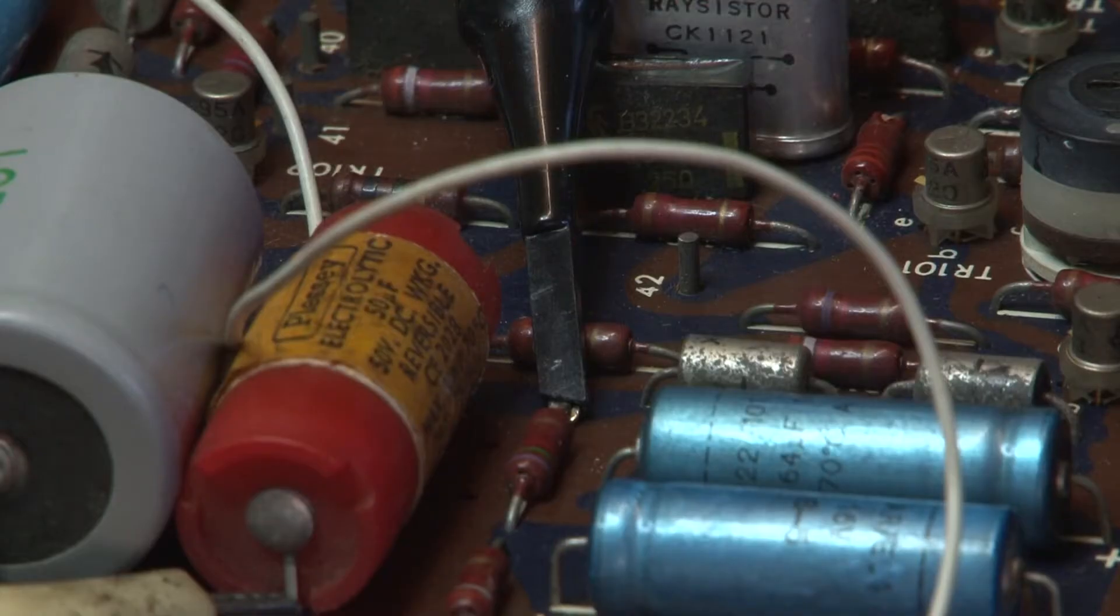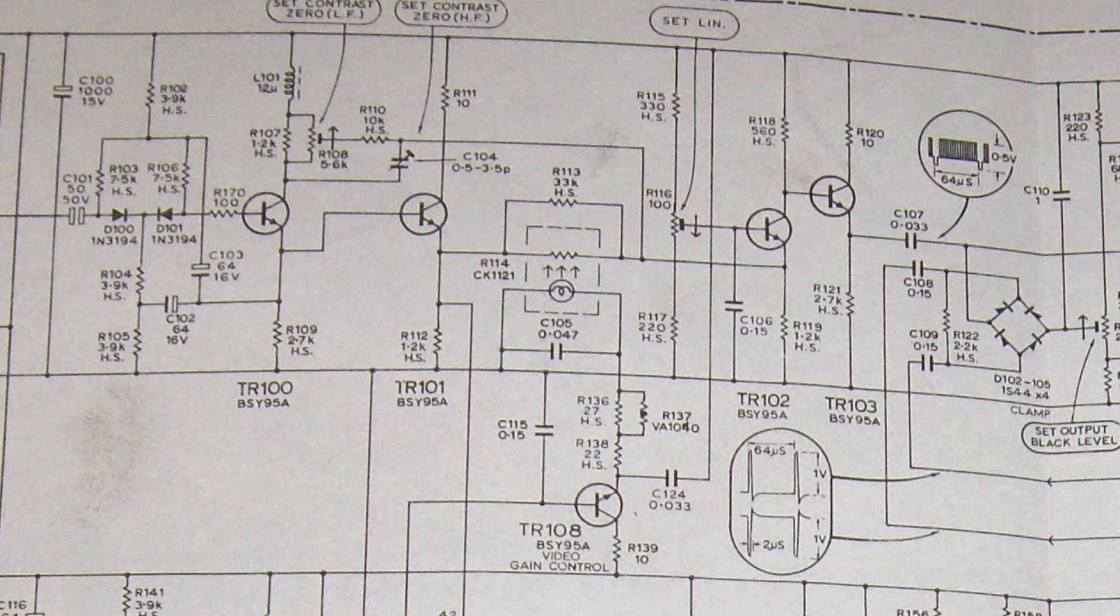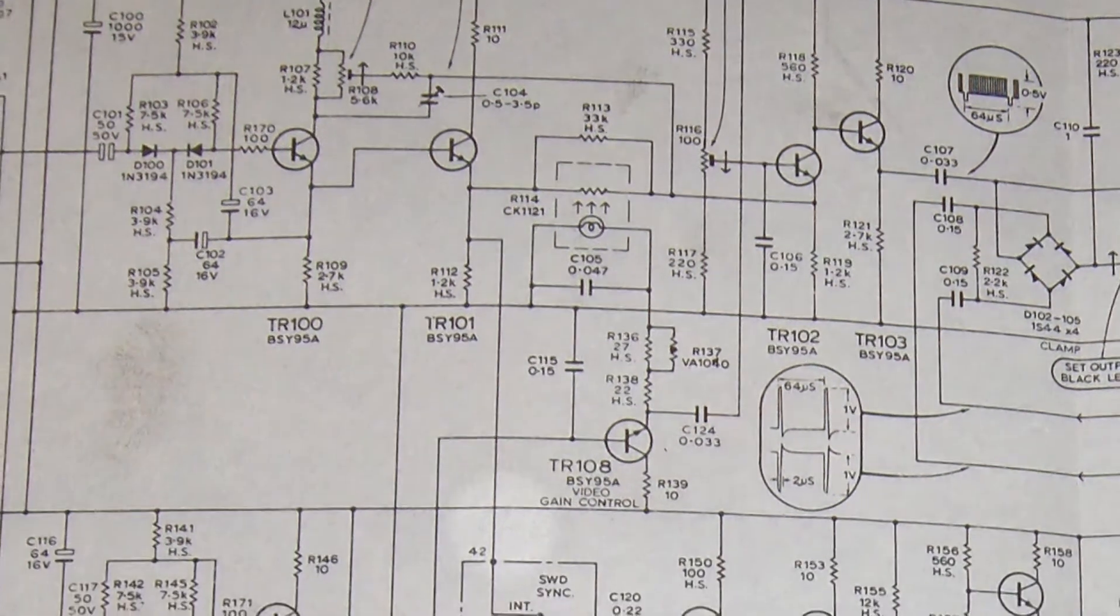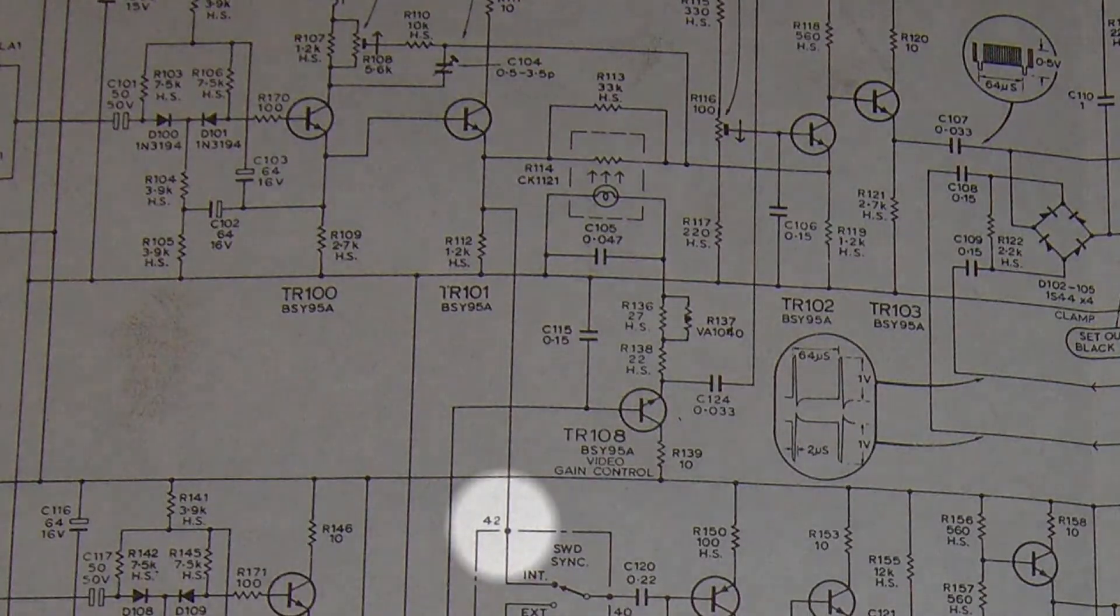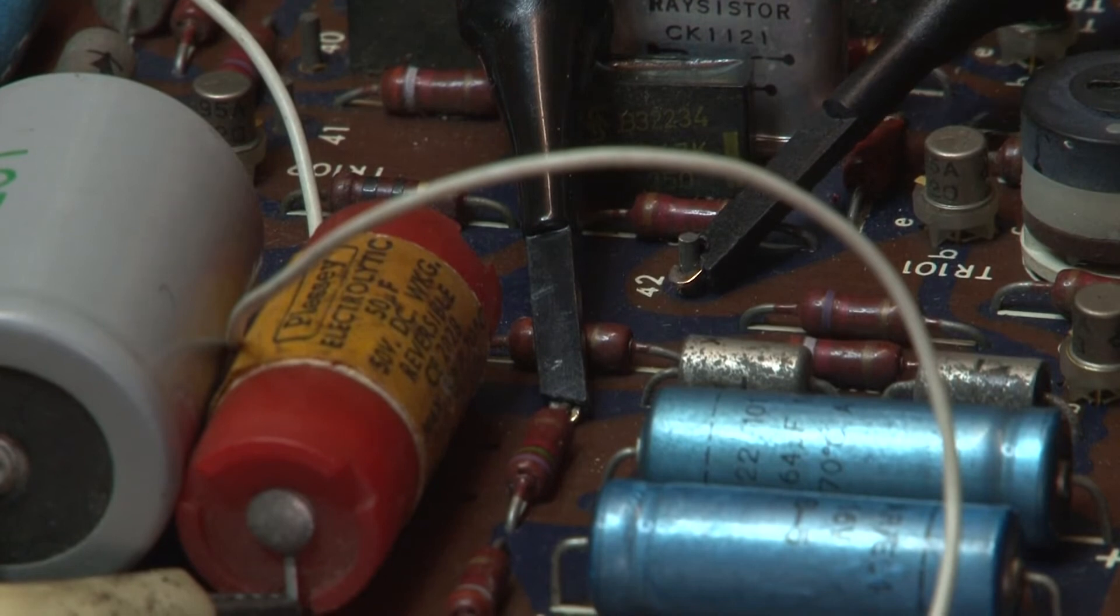The obvious thing to do is now to divide the circuit into two and we'll look half way along the circuit. A good place then would be the emitter of TR101 and there's a convenient test point 42. So we'll have a look there and we'll see whether we've got a signal there.